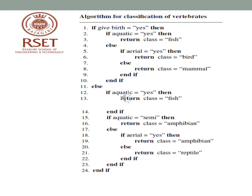This is the algorithm for classification of vertebrates, written as if-else statements based on the decision tree. If gives birth equals yes and aquatic equals yes, return class fish. Else, if aerial equals yes, return class bird; else return class mammal. For gives birth equals no: if aquatic equals yes, return fish; if aquatic equals semi, return reptile; otherwise check aerial.